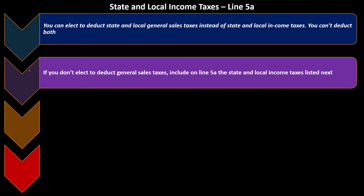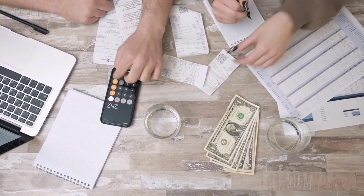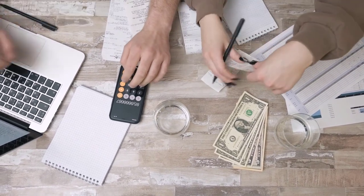If you don't elect to deduct general sales taxes, include on line 5A the state and local income taxes withheld from your salary during 2021. Just like with the federal side, states like California and New York that have a state income tax will withhold money from your paycheck. If you're a W-2 employee, it's a similar setup to the federal side.